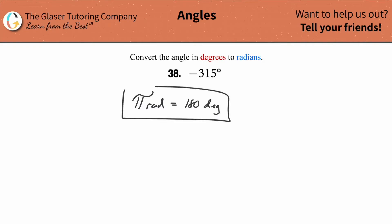After I know this known relationship, you might know different proportions here, you might know that there's two pi radians in 360 degrees. That's fine, too. I like to use this one because it's already kind of more or less simplified.